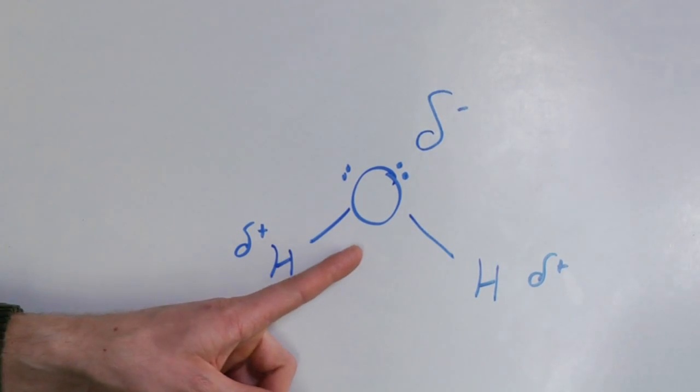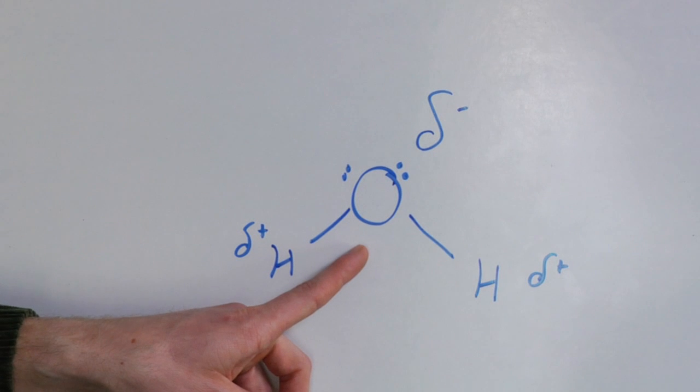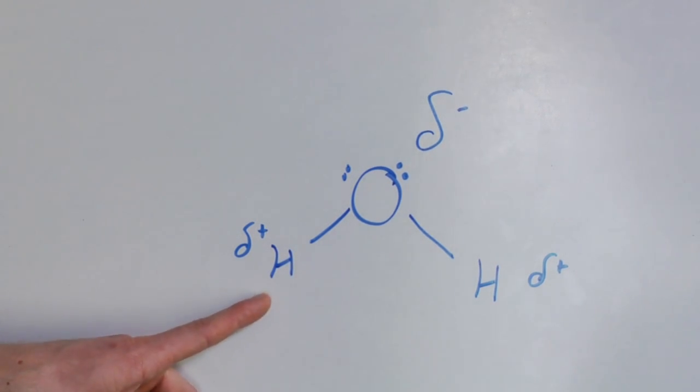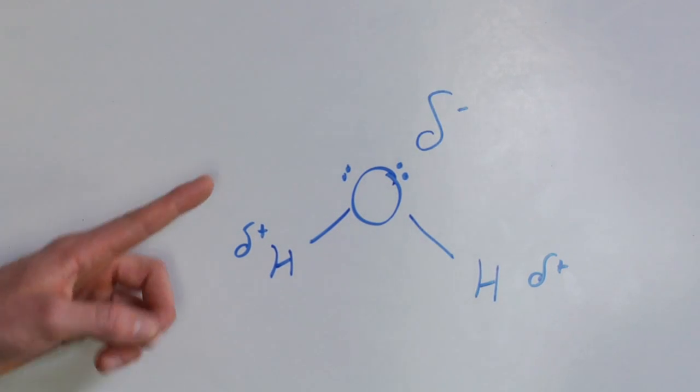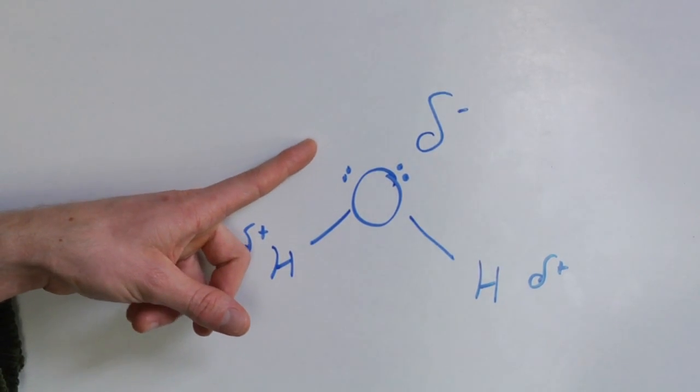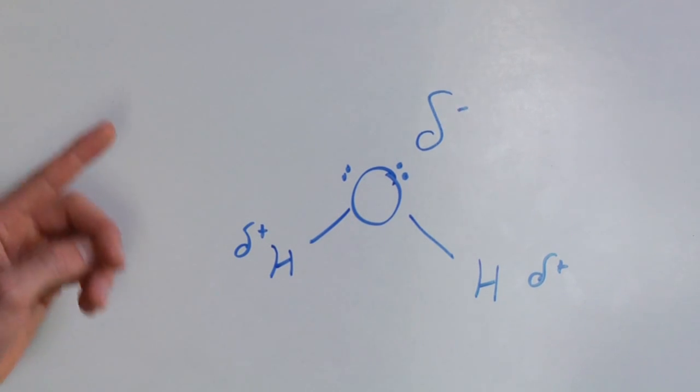But oxygen has an electronegativity greater than that of hydrogen. So oxygen tends to pull the electrons and hog them closer to itself. The net result is that the oxygen part of water is slightly negatively charged and the hydrogen parts of water are positively charged.